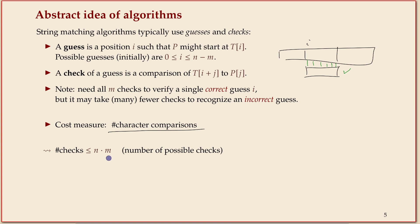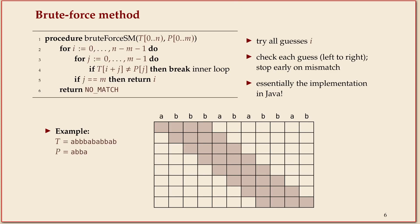The brute force algorithm just tries all the guesses one after the other. If it ever finds a match, it's happy and returns. Otherwise, it keeps going. So you iterate over all guesses, all the start positions in the text.